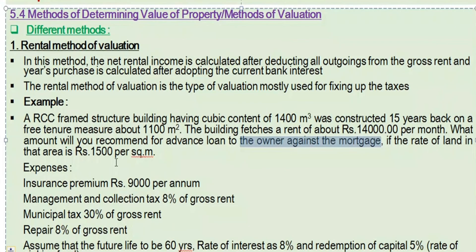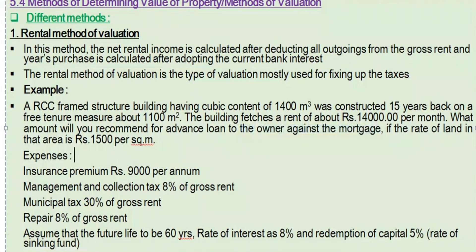The advance loan is to be recommended against the property if the rate of land in that area is 15,000 per square meter. Gross income per month is based on the rent of 14,000 per month.